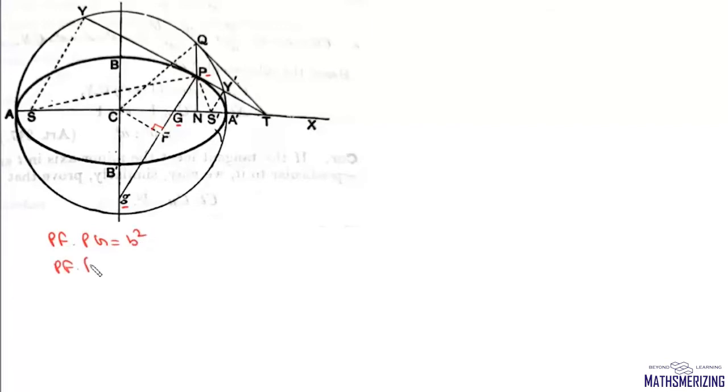Another important result: if the normal at any point P meets the major and minor axis in capital G and small g respectively, and CF is perpendicular on this normal, then we need to prove that PF × PG = b² and PF × Pg = a².